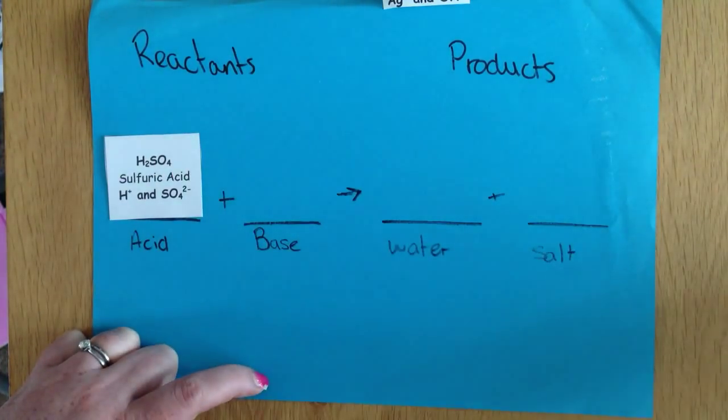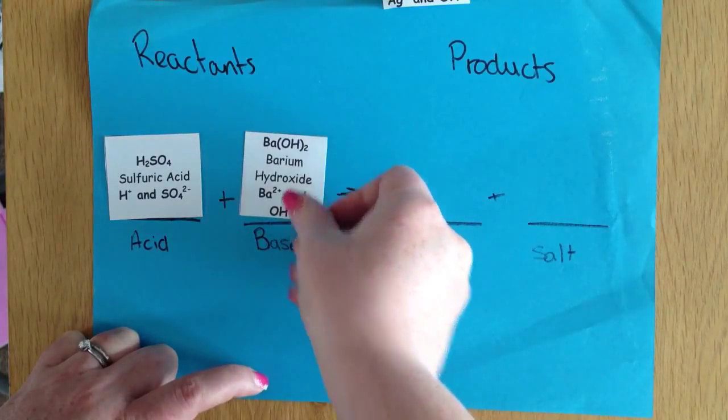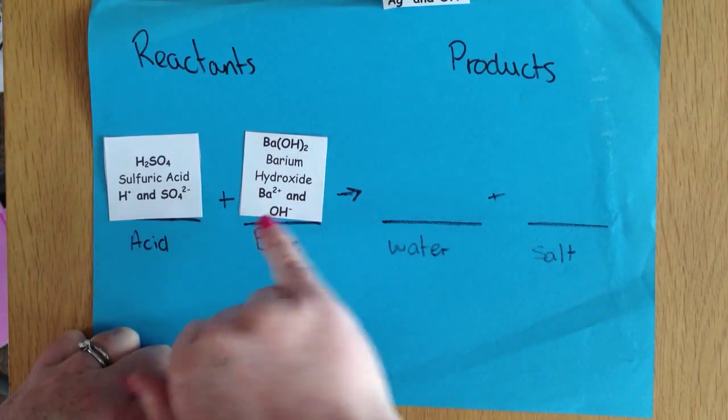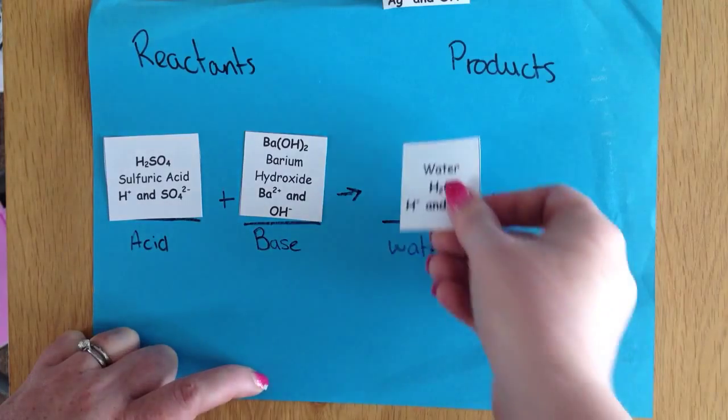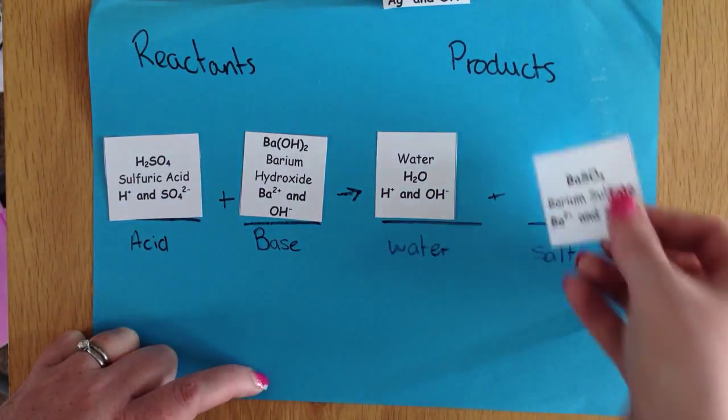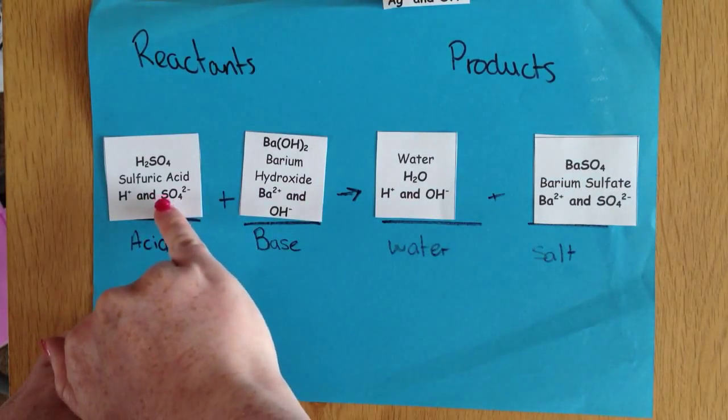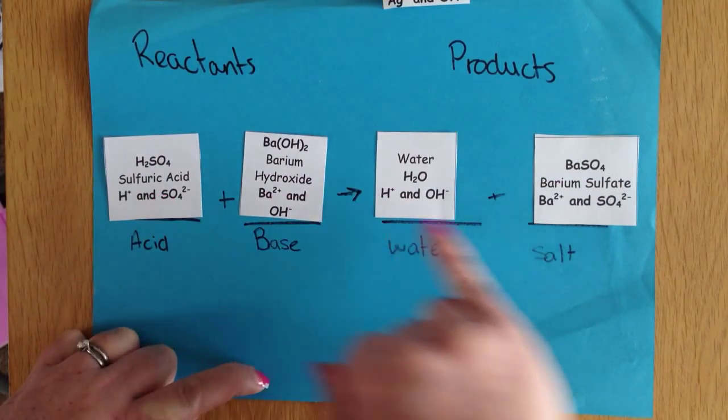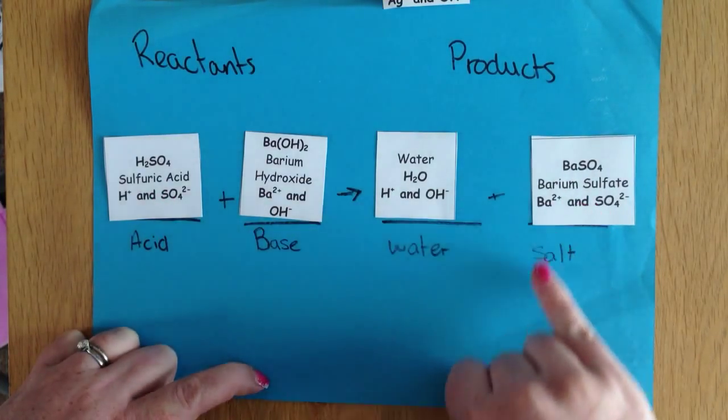Here we have sulfuric acid and barium hydroxide. So we have our hydrogen ion and our hydroxide ion. Pop those two together and they are going to make water. And then the bits that we have left over are sulfate and our barium. We pop those together and we get barium sulfate.